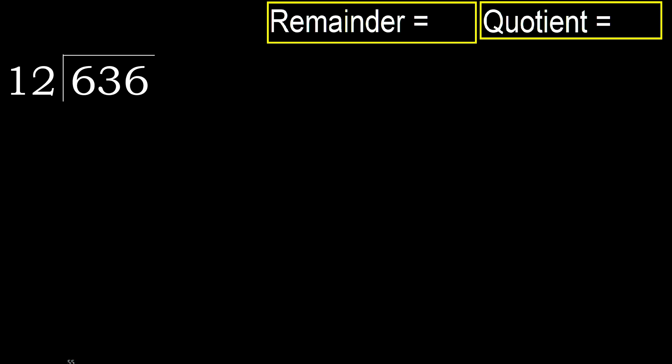636 divided by 12. 6 is less, therefore next. 63 is not less, therefore work with 63. Multiply by which number is nearest to 63, but not greater.